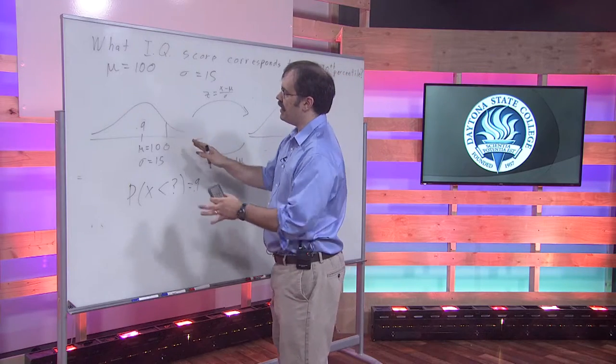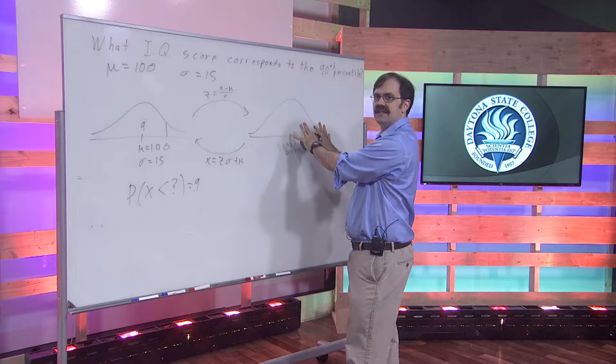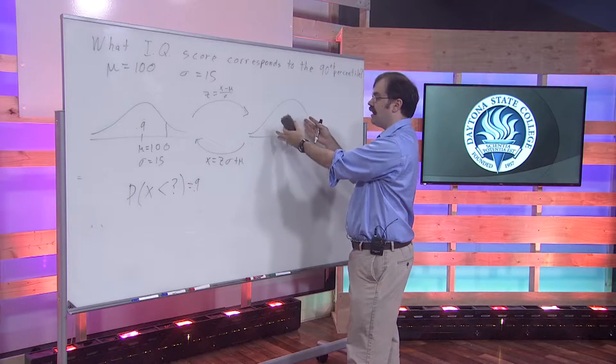So before, what we had done is we'd taken our x-values, converted them into questions about z-scores, and we were happy because we got a probability.